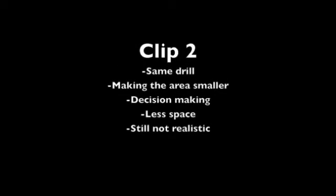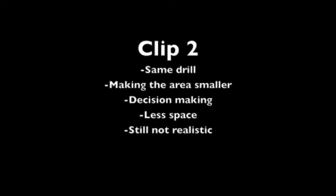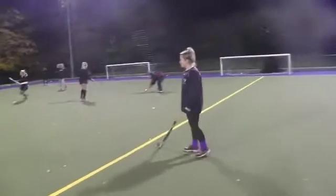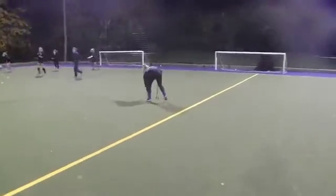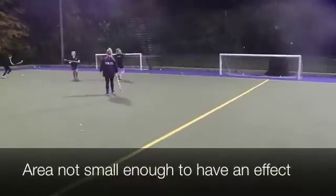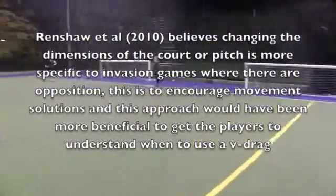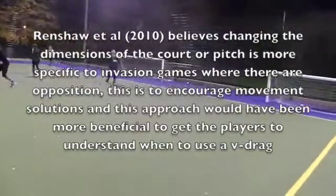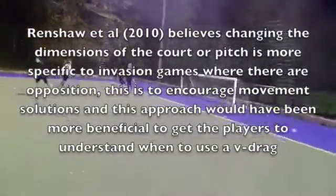In the same drill, I did try to incorporate the constraints-led approach by making the area smaller. This was to try and promote quicker decision making as they had less space to conduct a rollout or a V-drag. Again, I did not incorporate defenders, so realistically they would not conduct this skill unless they were in a match being put under pressure from a defender. A positive outcome was that the players started to look up and to see where they were running and passing. However, there was more negative than positive — the players were still just conducting the V-drag because I told them to, and the area I made was not small enough as they still had acres of space.